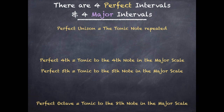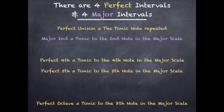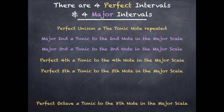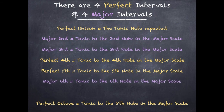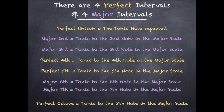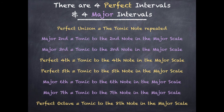And there are four major intervals: a major second, tonic to the second note in the major scale; a major third, the tonic to the third note; a major sixth, the tonic to the sixth note; and a major seventh, the tonic to the seventh note of the major scale.